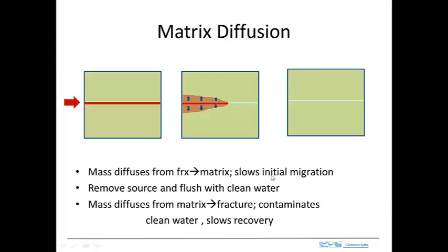Matrix diffusion slows the initial migration. What's happening here is that the matrix is assumed to be very low permeability. So essentially we can have diffusion out into it, but there's no actual advection within this matrix. The contaminants are sitting there but they're not able to move by advection. Eventually we have contaminants in the fracture and an envelope of compounds that have diffused into the matrix.